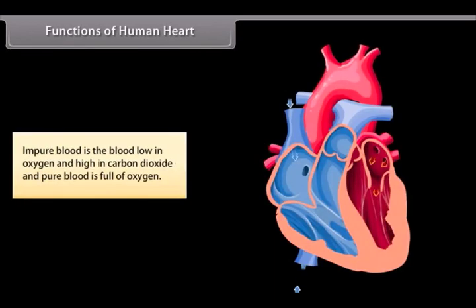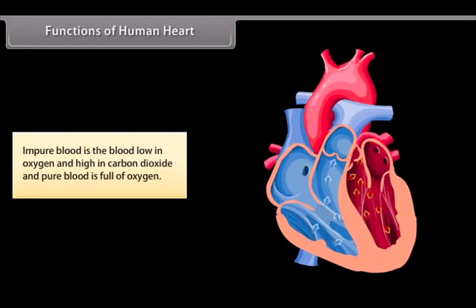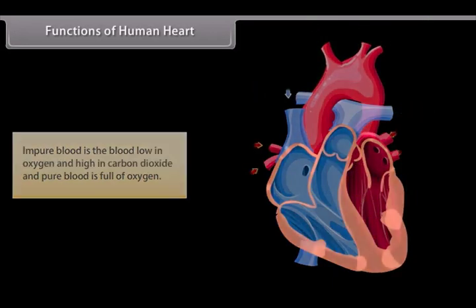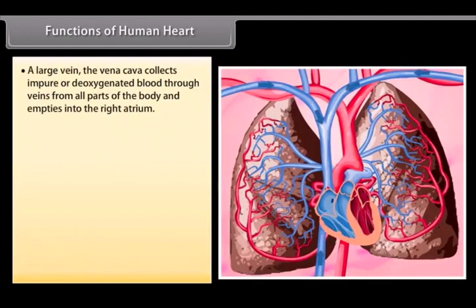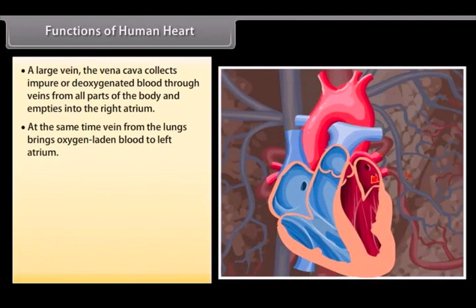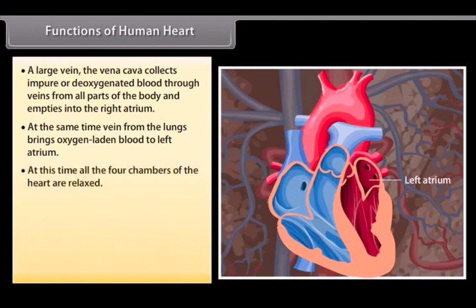Functions of human heart. Impure blood is the blood low in oxygen and high in carbon dioxide and pure blood is full of oxygen. A large vein, the vena cava, collects impure and deoxygenated blood through veins from all parts of the body and empties into the right atrium. At the same time, vein from the lungs brings oxygen-laden blood to the left atrium. At this time, all the four chambers of the heart are relaxed.